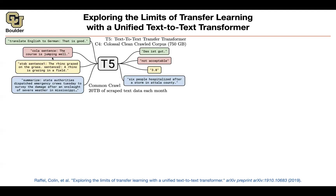For example, the sentence 'the course is jumping well' — it should be 'going well.' T5 is going to tell you: not acceptable. So those 0 and 1 classification problems, you are turning them into outputting a sequence. You can also have two sentences and ask how similar they are — outputting a scalar from 0 to 5. T5 outputs that as a word, like '3.8', just as text.